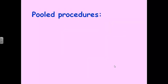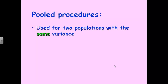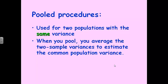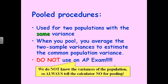When you do this on your calculator, it'll ask whether you want to use pooled procedures. Statisticians use pooled procedures when you have two populations that have the same variance. If two populations have the exact same variance, you can use a pooled procedure — you take the average of the two sample variances to estimate the common population variance. Don't use this on the AP exam; we almost never know the variances of the population. Rule of thumb: always tell the calculator no for pooling. When you get to college after getting a 5 on the AP exam, sign up for Statistics 2 and you can learn all about pooling.